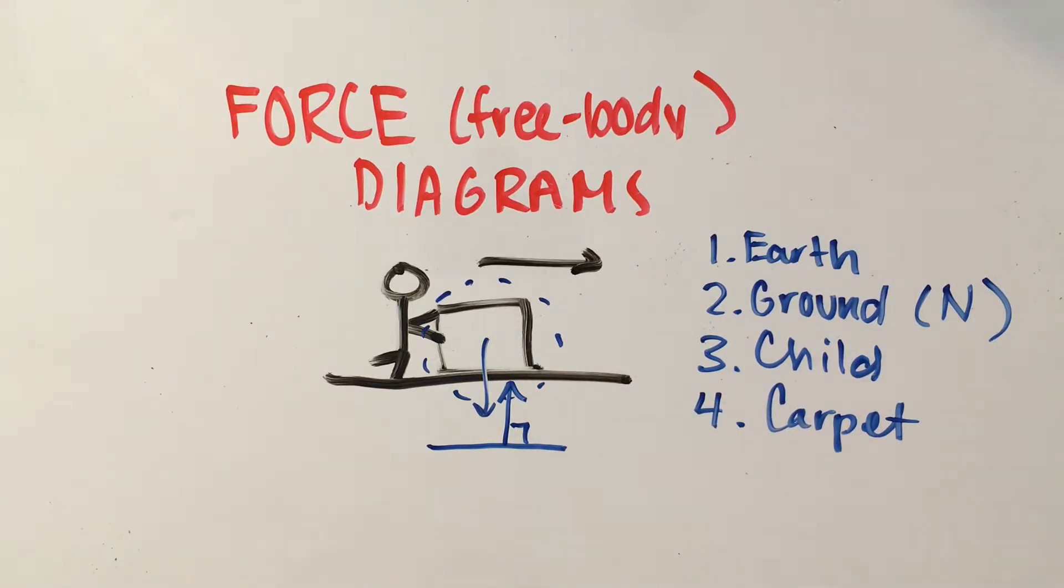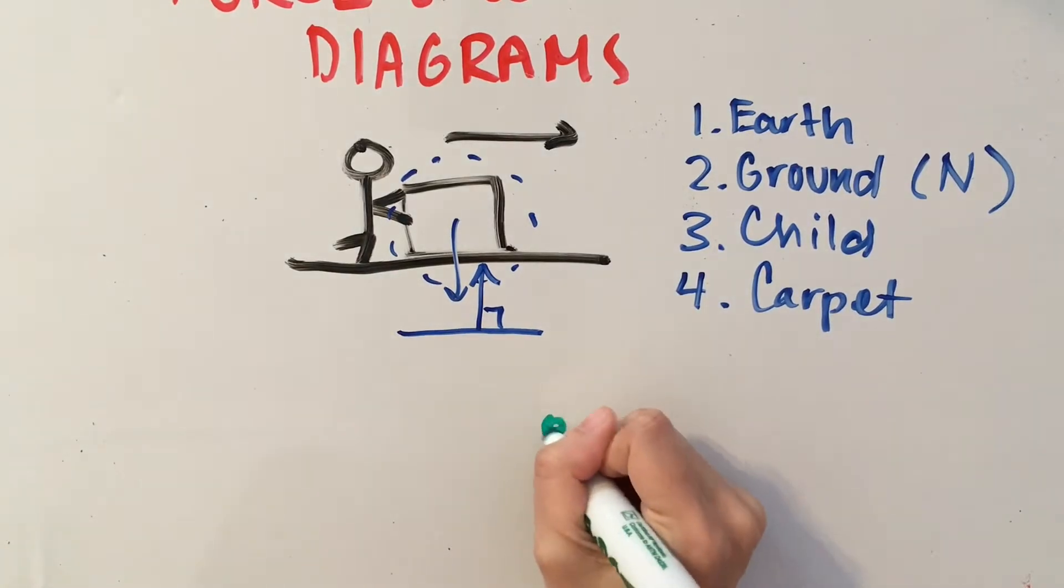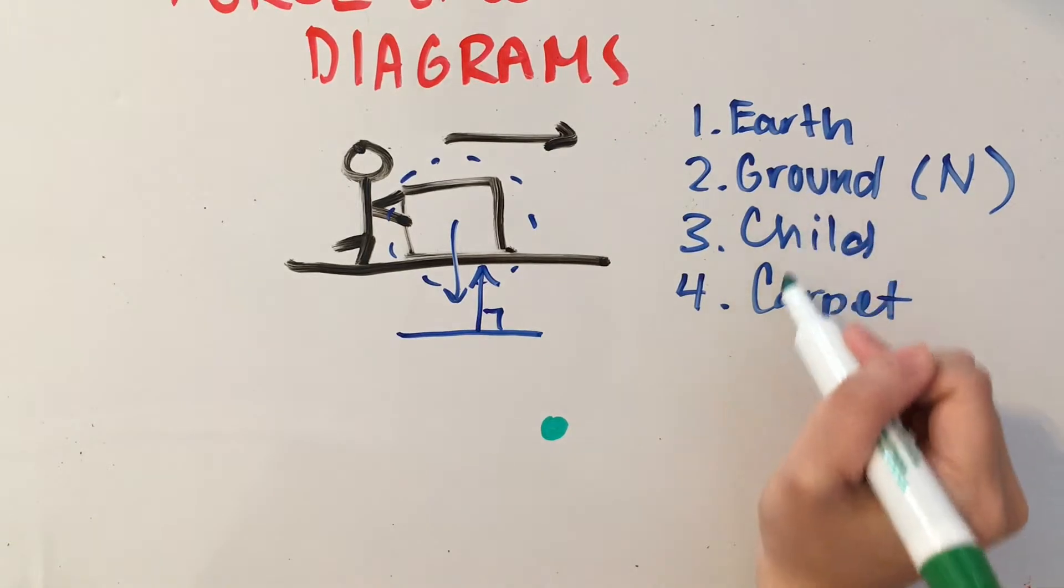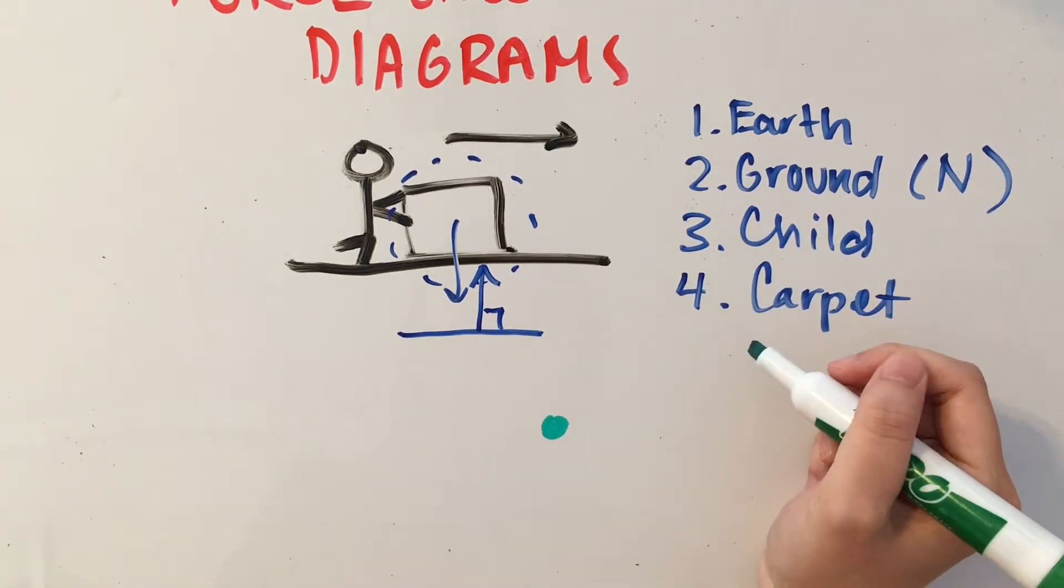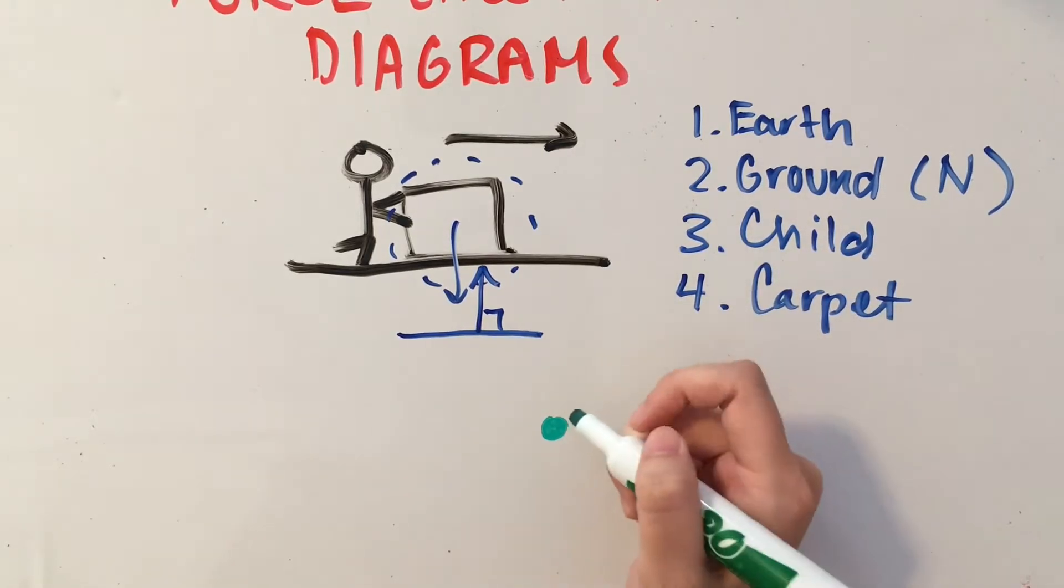Let's go ahead and start drawing our force diagram. What we need to do is represent our system with a dot. So that's going to be our box. Let's go through each of these external objects and draw in the appropriate forces that each of them exerts on the system.